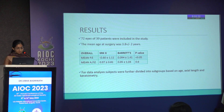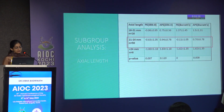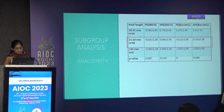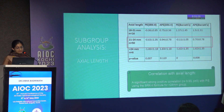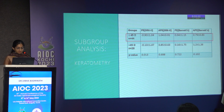In subgroup analysis according to axial length, eyes were divided into three groups. In the shorter axial length group of 18 to 21 mm, SRK2 performed much better than Barrett's. But in the group with 21 to 24 mm, Barrett's performed much better than SRK2. In the higher axial length group, both IOL formulae had a higher predictive error. Correlation analysis showed a strong positive correlation using the SRK2 formula for the higher axial length group.